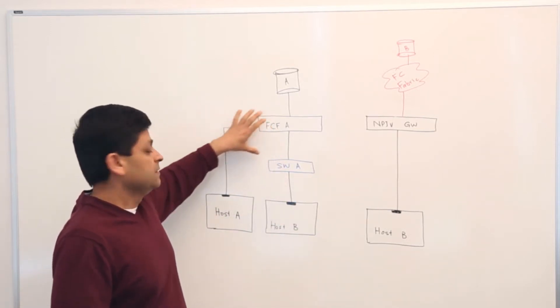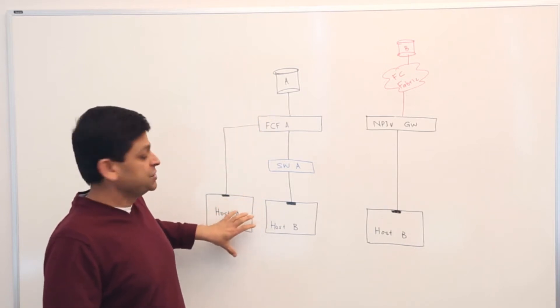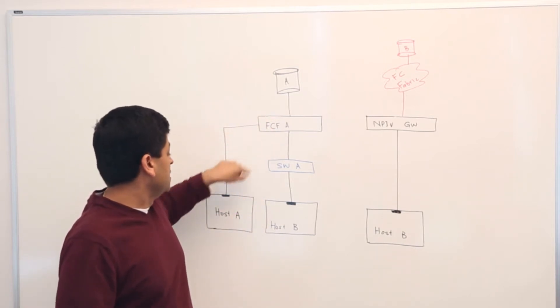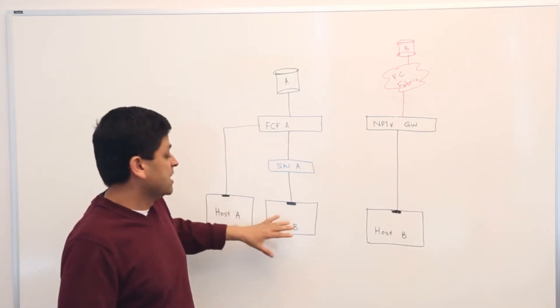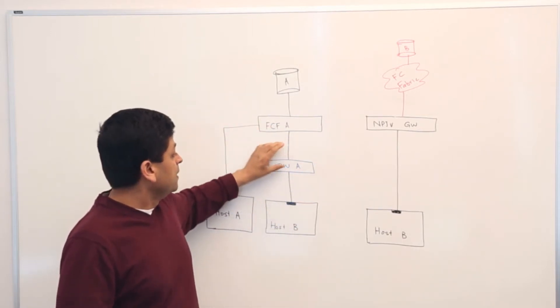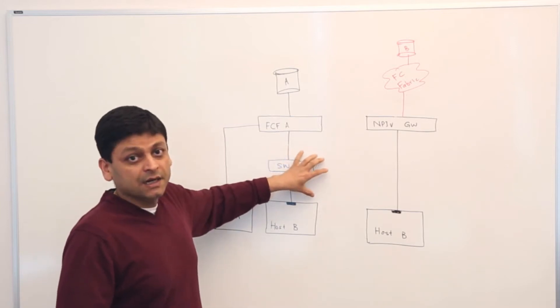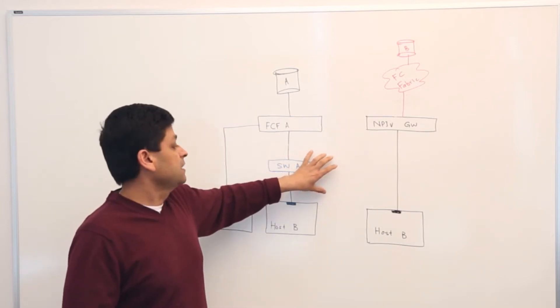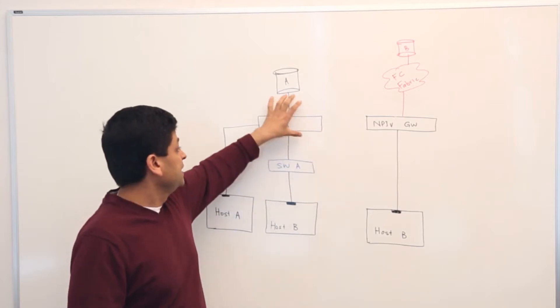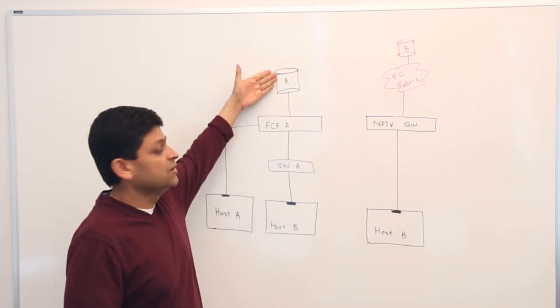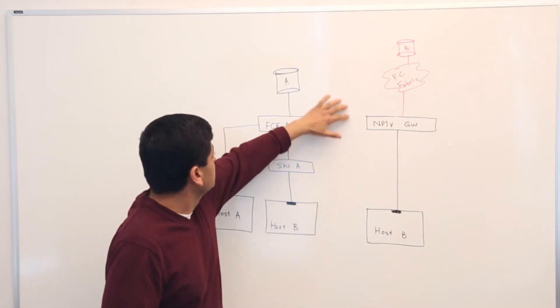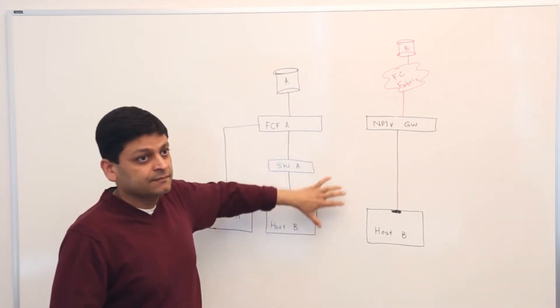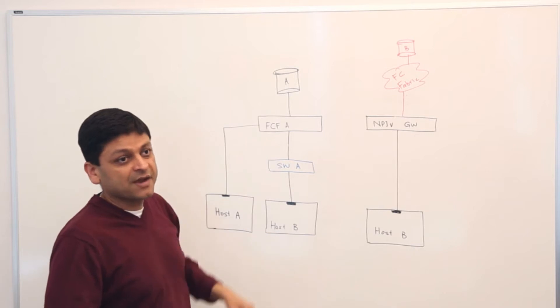You have a host or an initiator hooked up via an Ethernet cable or Ethernet network. You have a host or initiator going via another Ethernet or a DCB switch connected to this FCF. And here you have a target or a storage device hooked up. So as you can see, this is a complete Ethernet network or complete Ethernet fabric.